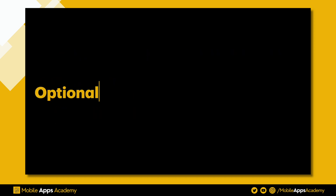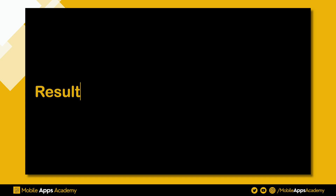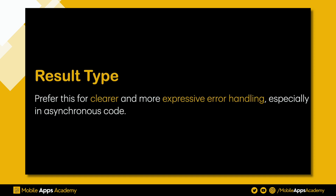So here is the thumb rule: use optionals when you want a quick and straightforward check for nil values. For result type, prefer it for cleaner and more expressive error handling, especially in asynchronous code.